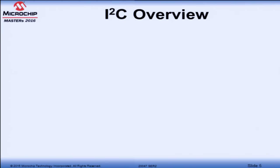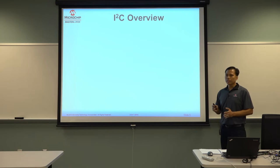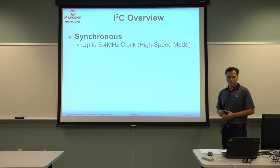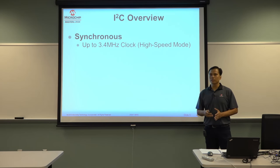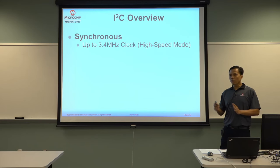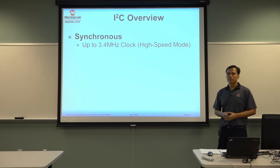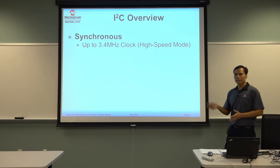Let's start with the overview. I squared C stands for inter-integrated circuit, and it was developed by Philips, now NXP. Here are some characteristics of this bus. First, it is a synchronous bus. The clock is provided by the master and can range from up to 100 kHz for the standard speed, 400 kHz for the fast mode, 3.4 megahertz for the high speed mode, and there is also an ultra fast mode at up to 5 megahertz, but it's unidirectional.